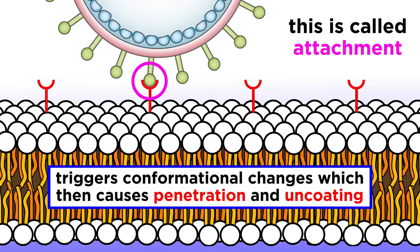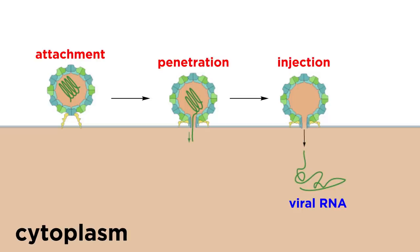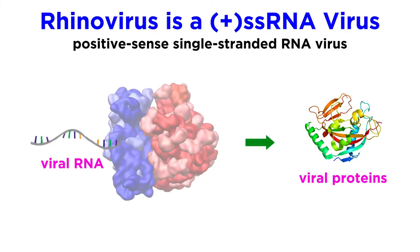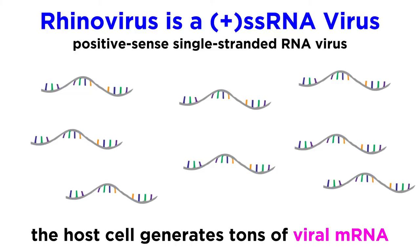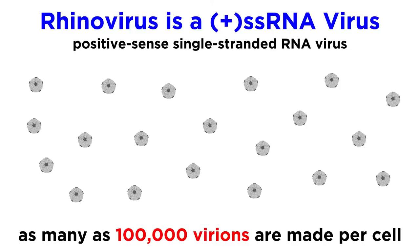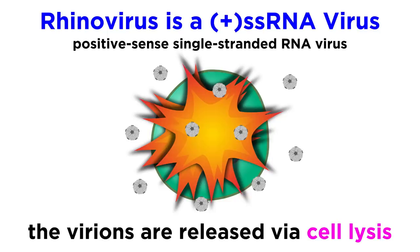Attachment then triggers conformational changes in surface proteins of the capsid, which causes penetration and uncoating. The rhinovirus RNA is injected directly into the cytoplasm of the host cell. Once inside, the genetic material doesn't have to undergo transcription, because it's already mRNA. The host cell ribosome then translates the viral genetic material, triggering a very intricate and tightly controlled process of protein chopping and virus assembly, all orchestrated by the directions encoded in the viral genome. At the same time, the host cell generates tons of viral mRNA. Ultimately, many, many rhinovirus particles are made — as many as 100,000 virions per cell — which are then released via cell lysis, where the cell sort of explodes.